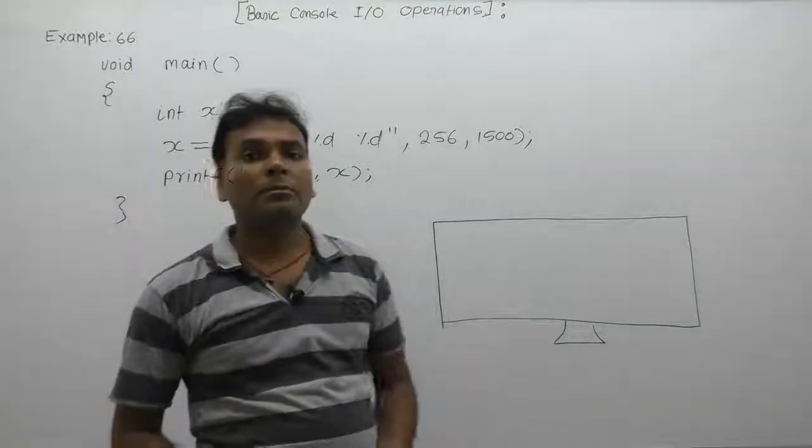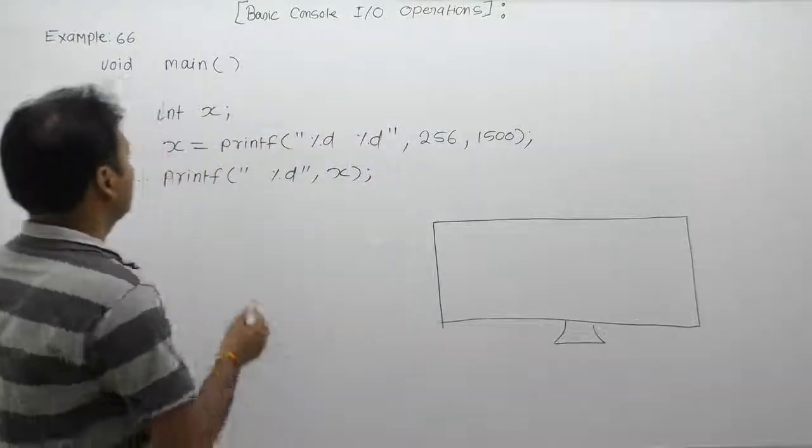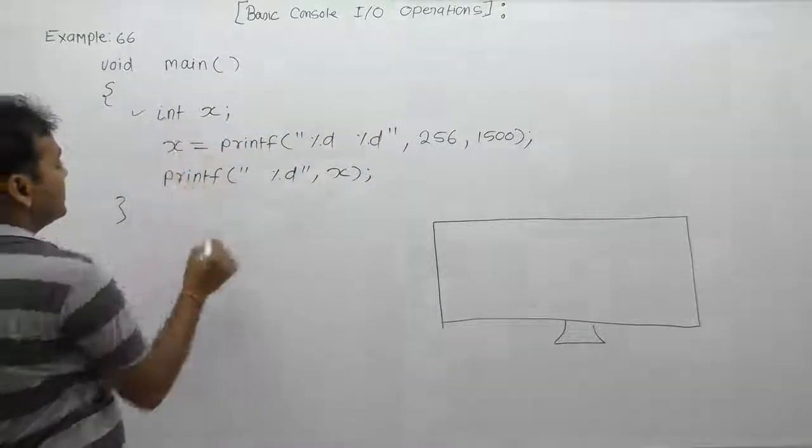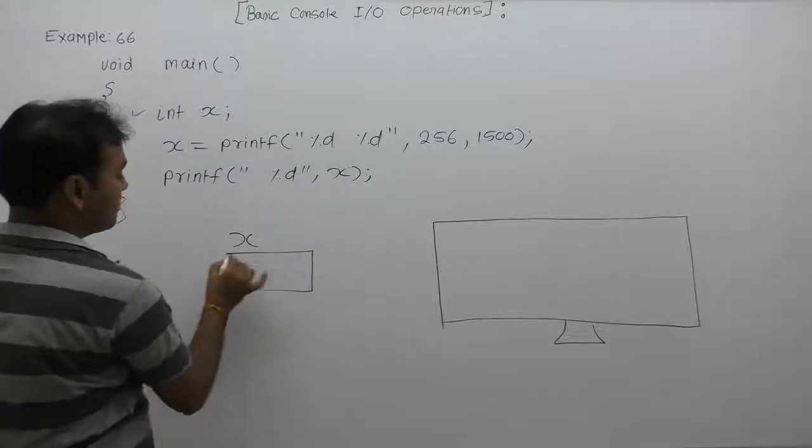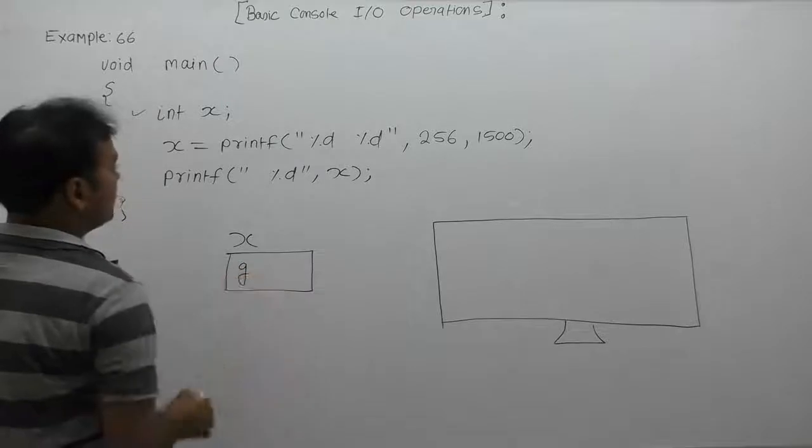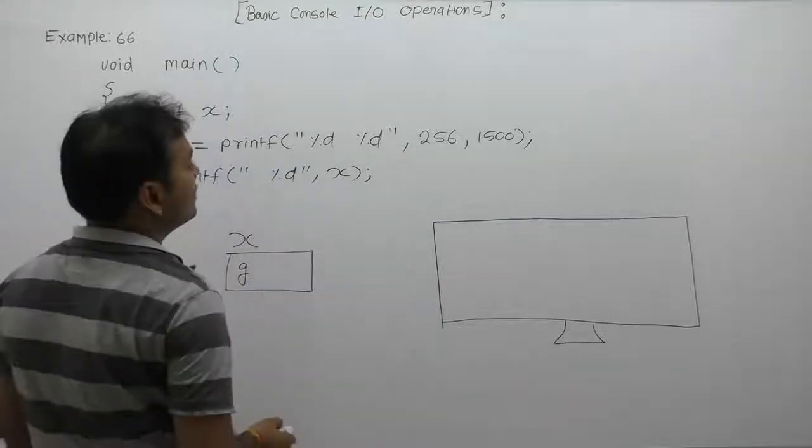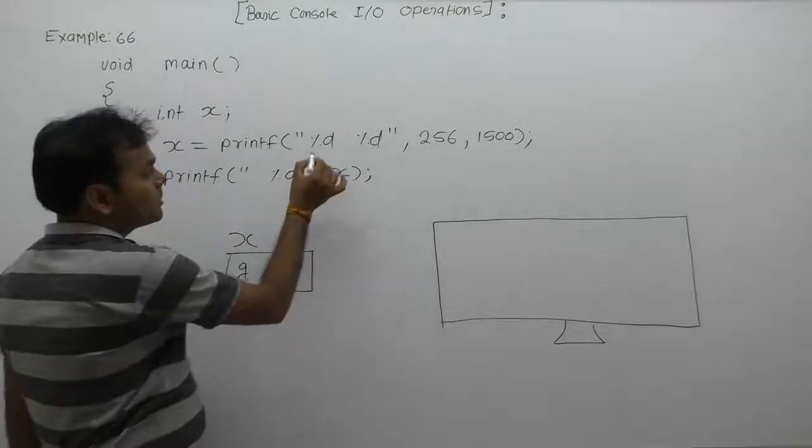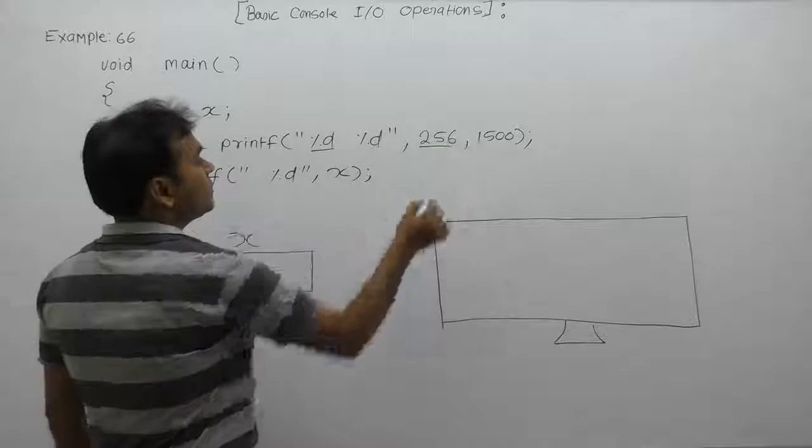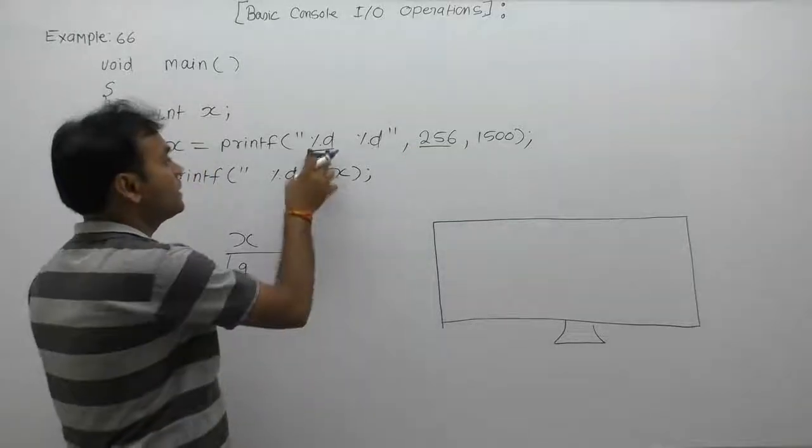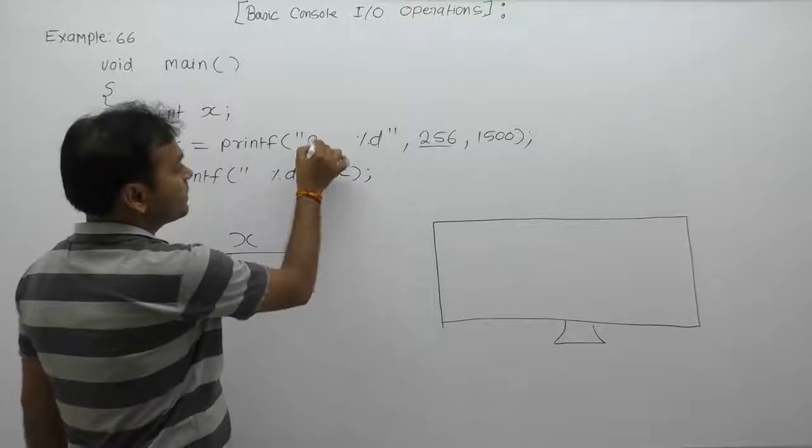Next example regarding return value of the printf function. Here we are declaring variable x with initial value as garbage or unknown. According to behavior of printf, the first format specifier will be replaced by the first corresponding argument which is 256. Therefore we are replacing the first %d with 256.